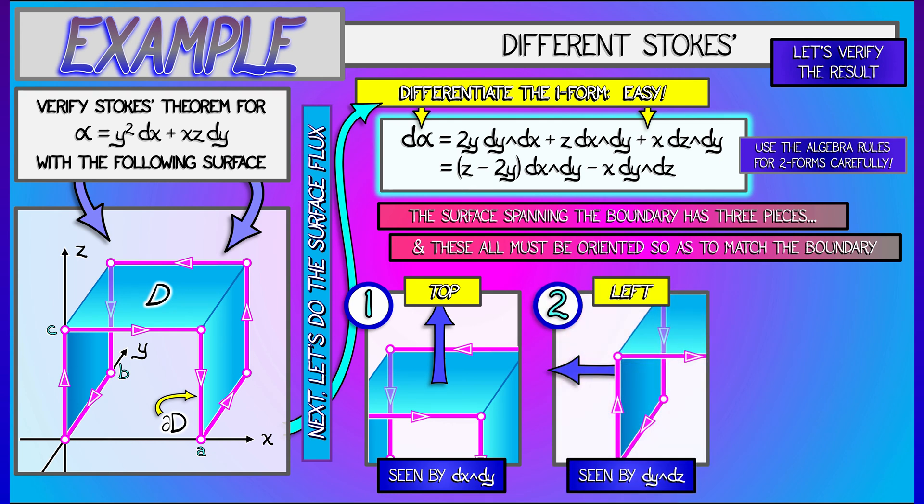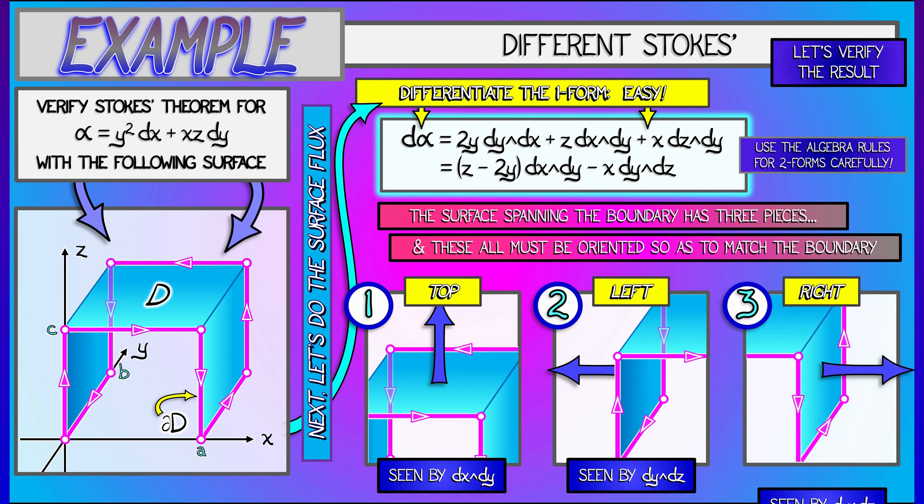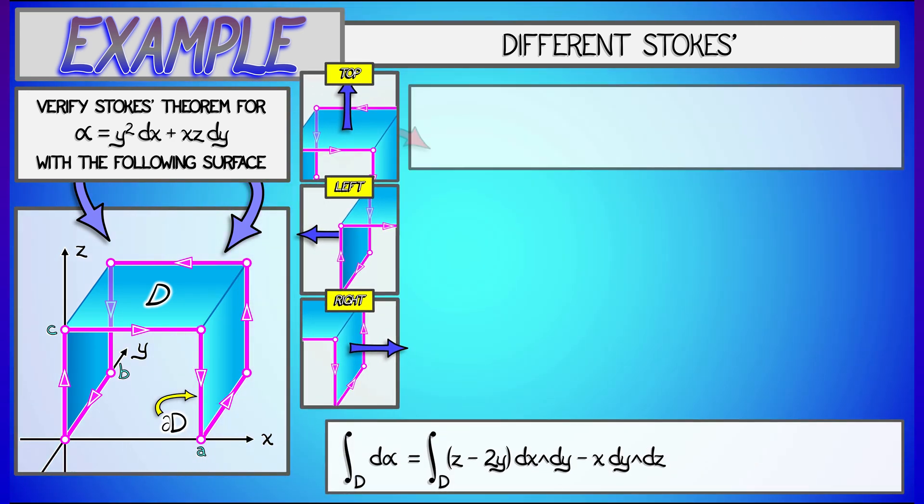That surface is seen only by dx wedge dy. On the other hand, the left side, that leftmost rectangle, is oriented by a vector pointed along the negative x-axis, and that is seen by dy wedge dz. The last component to the right is oriented by the positive x-axis. That is seen by dy wedge dz as well.